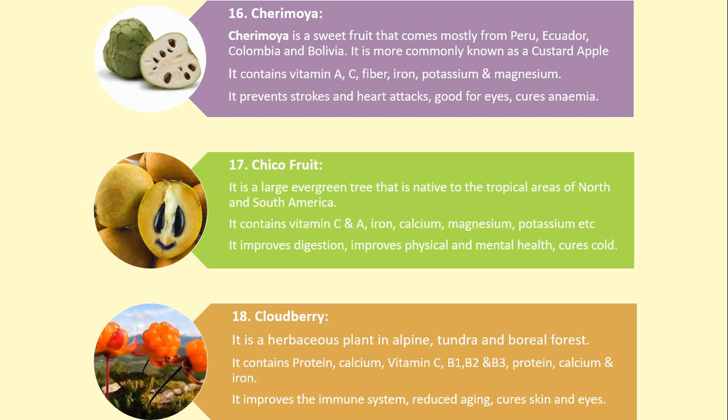Number 17. Chico Fruit. It is a large evergreen tree that is native to the tropical areas of North and South America. It contains vitamin C and A, iron, calcium, magnesium, potassium, etc. It improves digestion, improves physical and mental health, and cures colds.